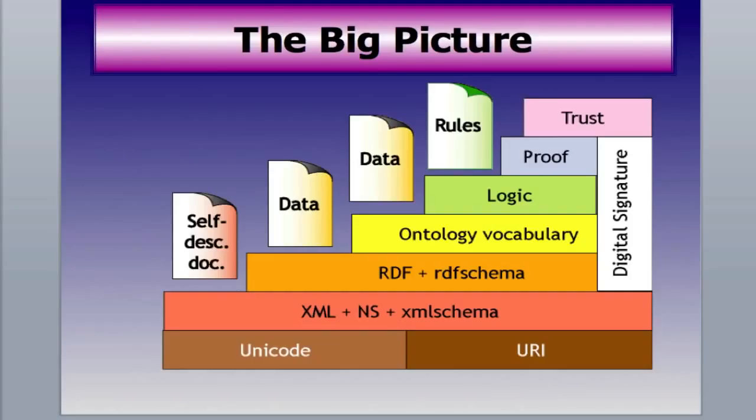With RDF, we'll be able to build an ontology or a vocabulary with basic rules. That'll tie on top with logic. With logic, we'll build on proofs that will know how things work. Those four layers — the RDF, the ontology, the logic, and the proof — they all form a digital signature, so you know that a document is what it says it is. And that brings us to the top layer, which is the trust.